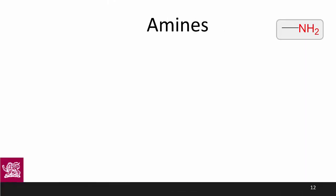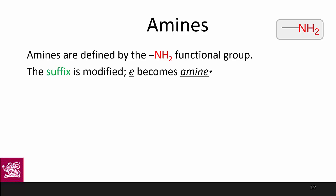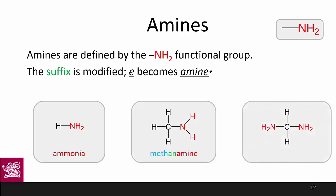Next up we'll be looking at amines, which is the first time we're introducing nitrogen into our compound. Amines are defined by the NH2 functional group and otherwise behave quite a lot like alcohols. The suffix is modified: the '-e' of '-ane', '-ene', or '-yne' becomes '-amine'. The simplest example isn't actually an amine — it's ammonia. Our next genuine amine is methanamine. And finally, methanediamine — again, diamines retain the '-e' in their suffix.